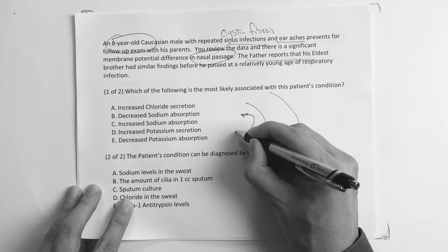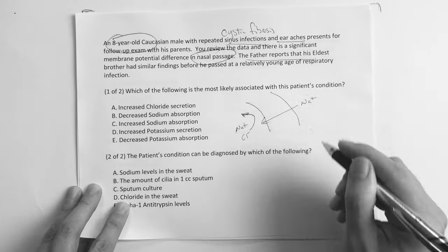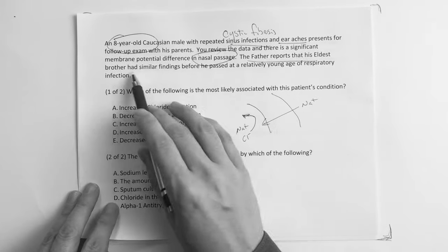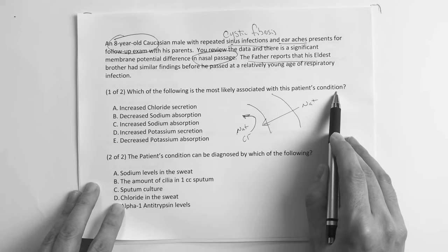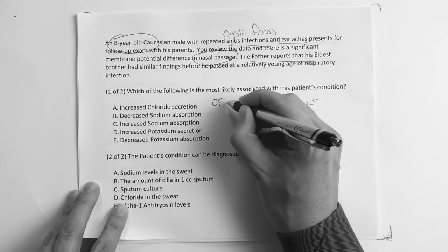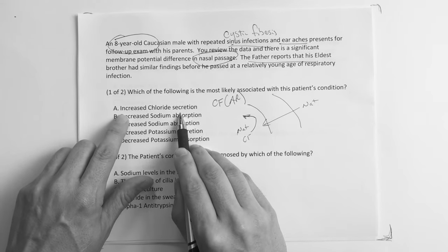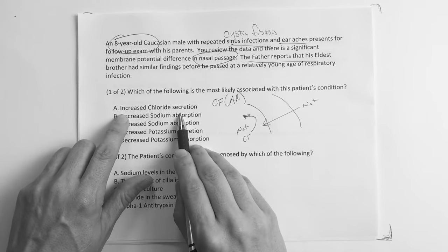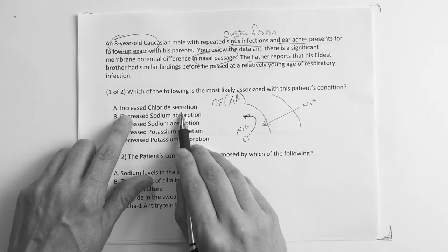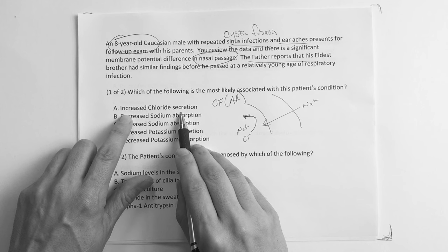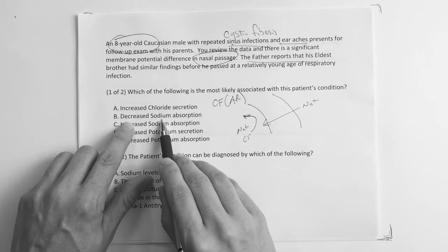You know, just if we do the picture, and then sodium kind of comes back in. The father reports that his eldest brother, which of the following is most likely associated with this patient's condition? Well we know it's cystic fibrosis, we know it's autosomal recessive. Is it increased chloride secretion? No, because that sounds like it's more like the first one, right? It almost sounds like it's more like a sweat gland if it was more secreted out.